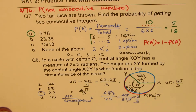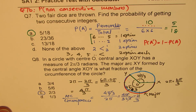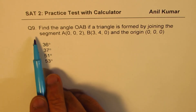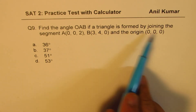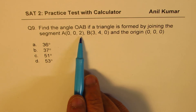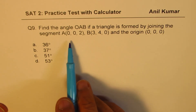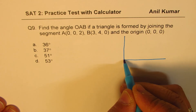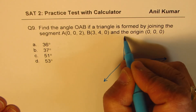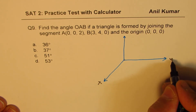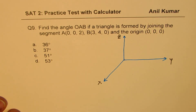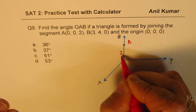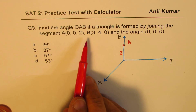Radians is a very important topic — do some more practice on it. Question 9: find angle OAB in a triangle formed by joining segments A(0, 0, 2), B(3, 4, 0), and the origin O(0, 0, 0). This is a three-dimensional figure. Point A is 2 units along the z-axis, and point B is at (3, 4, 0) in the xy-plane.